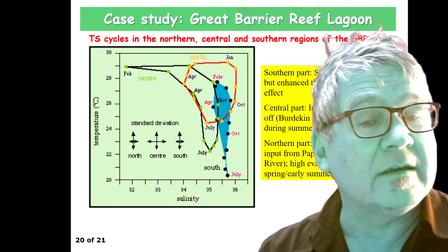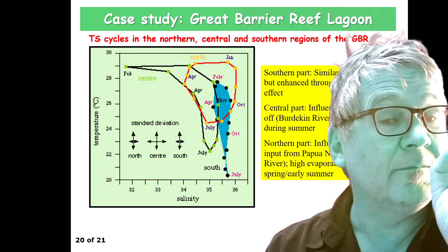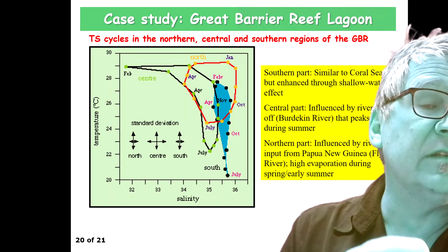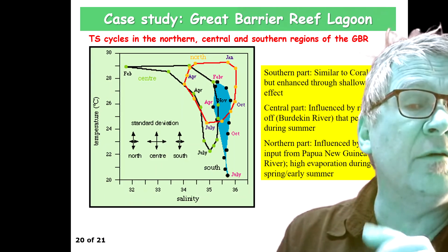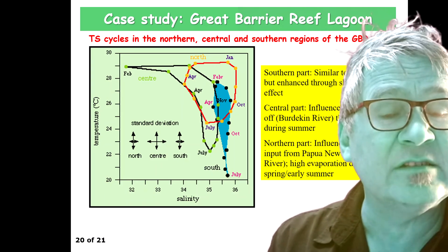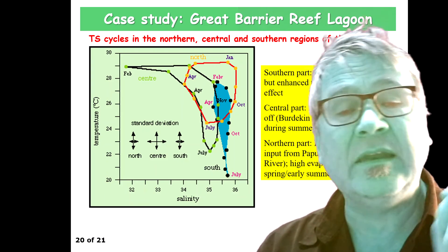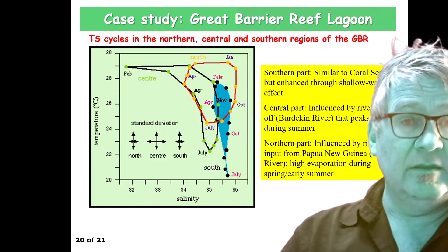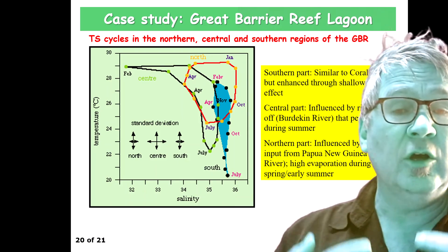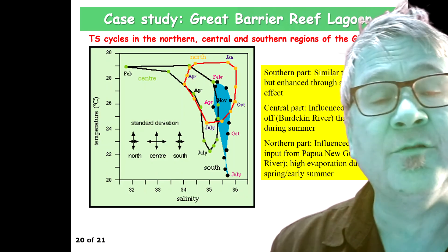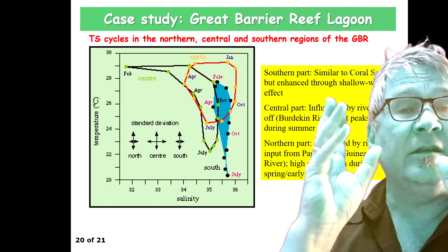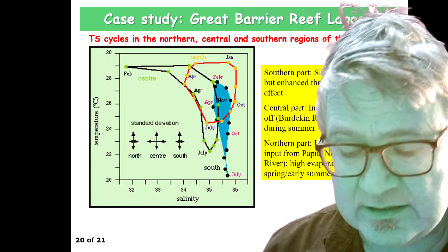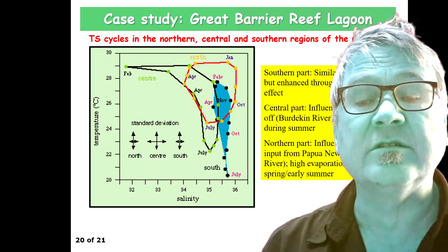So that was the case study. The ecosystems of these areas have adjusted over many, many years to these cycles. This is the environmental condition that changes from month to month, and your ecosystems have adjusted to these seasonal variations.